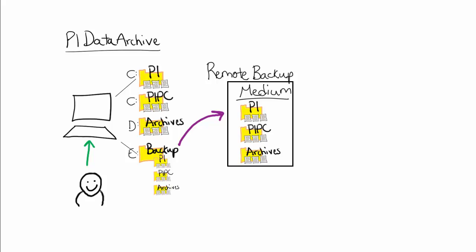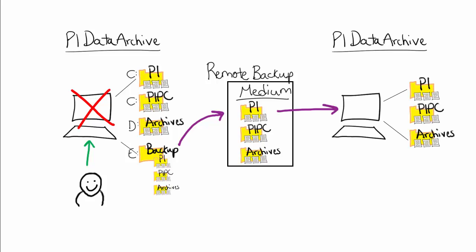In this case, the same configuration information and files will be copied to a remote medium. That way, if there is a hardware failure on the PI Data Archive machine itself, we will be able to restore our system on a new machine using the files from a remote backup location.